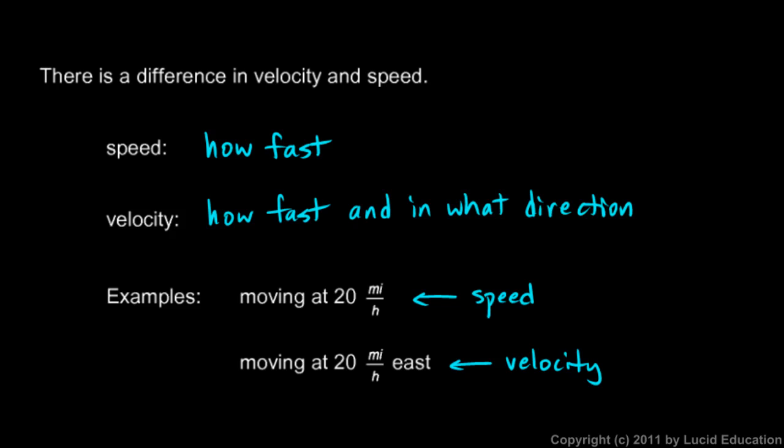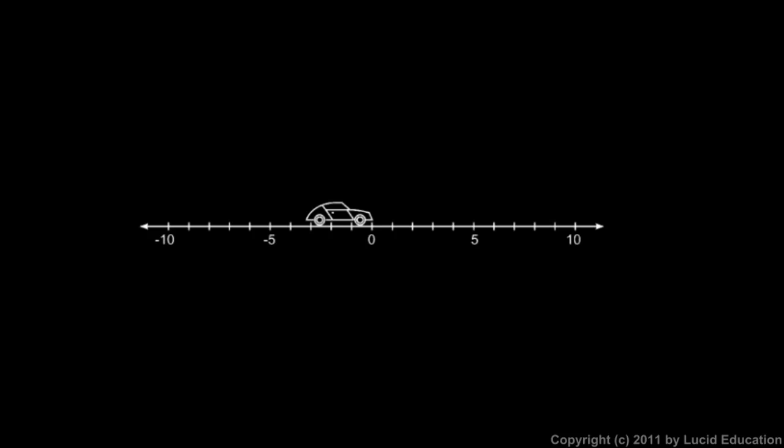So that's our technical difference in speed and velocity. Velocity has direction. So imagine our car again. Suppose it's moving at 20 miles per hour. Well, if it's moving this way, which in the way we've set up this number line, this way is forward or to the right in our diagram, we would say its velocity is 20 miles per hour.